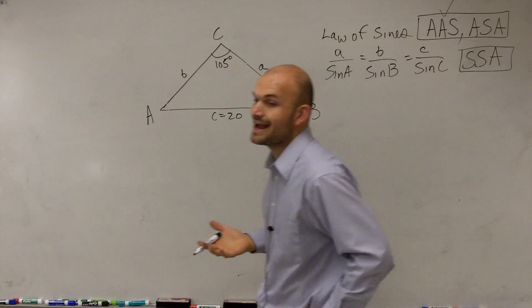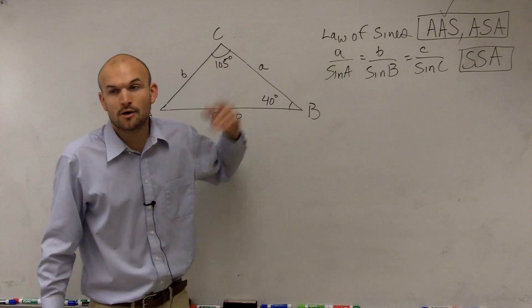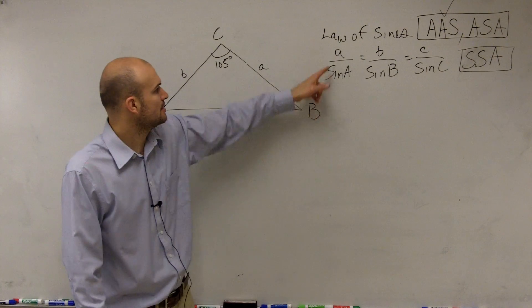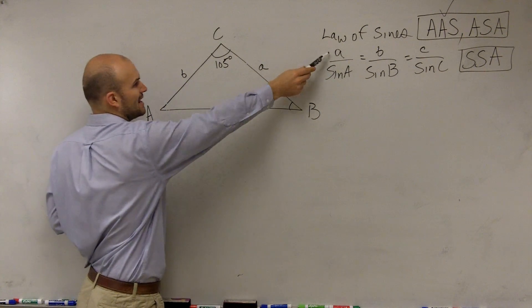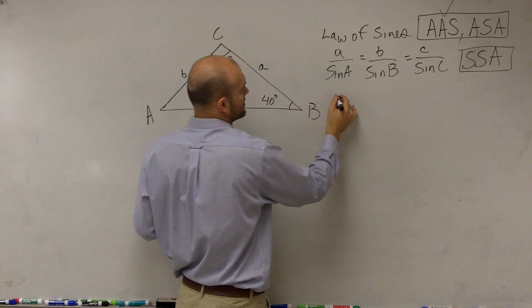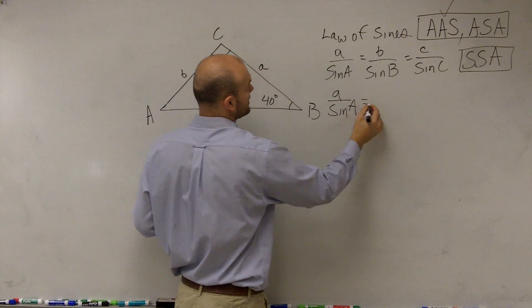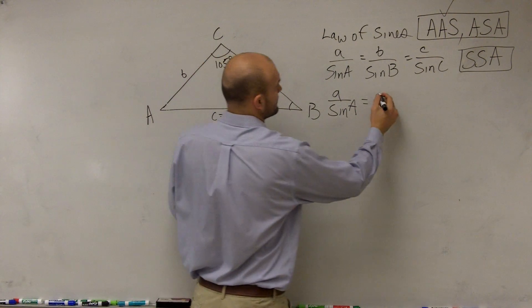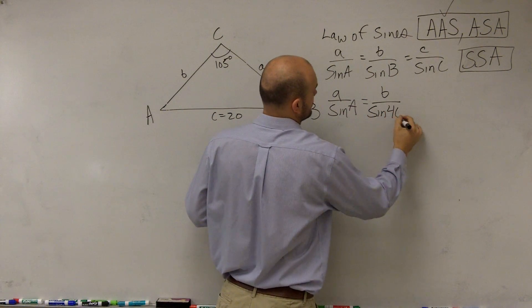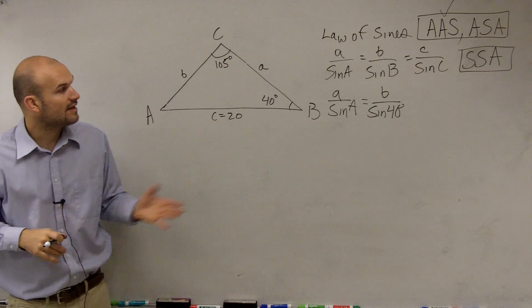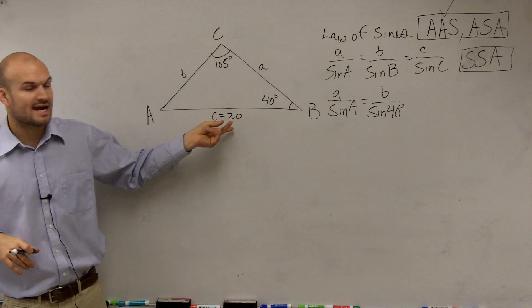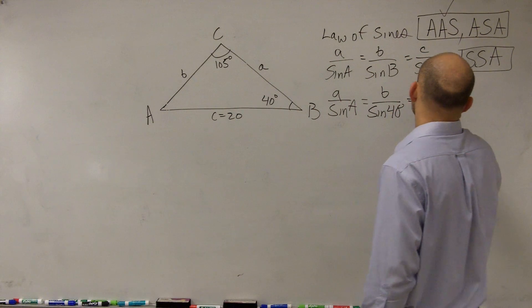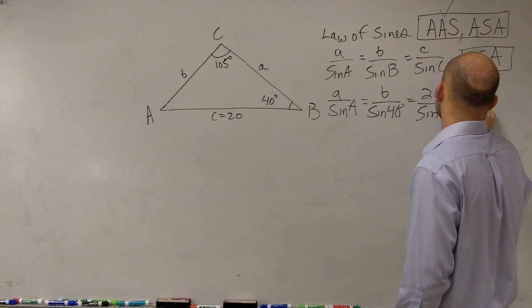So therefore, since I have that congruency, I can now apply my law of sines formula. So let's plug in what information we have for the law of sines. Well, we don't have sine A. We don't have a, nor do we have angle A. So I can just write a over sine of A equals. We don't have b, but we have the angle B. So we could say b over the sine of 40 degrees. Then let's look at c. And for c, we have the length 20 and the sine of 105.